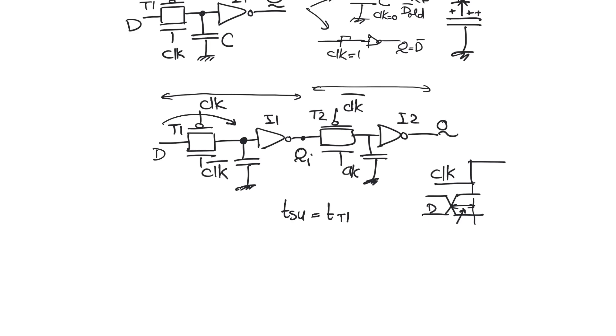Why do we not include t-inverter 1? Again because the definition of setup time is the minimum amount of time we have to stabilize D before the active edge, so it's the minimum time. This is just enough. We don't need to wait any longer and so this is t-setup.